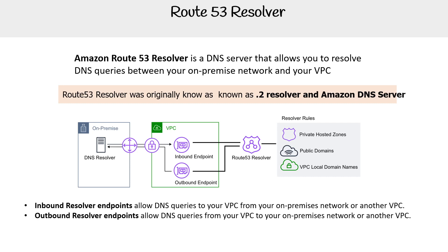This really just depends on the direction of the traffic you need things to go. If you have an inbound resolver, this allows DNS queries to your VPC from your on-premise network. Outbound is DNS queries from your VPC to your on-premise network. Note that you create resolver rules, and these are going to work with private hosted zones, public domains, and VPC local domain names.